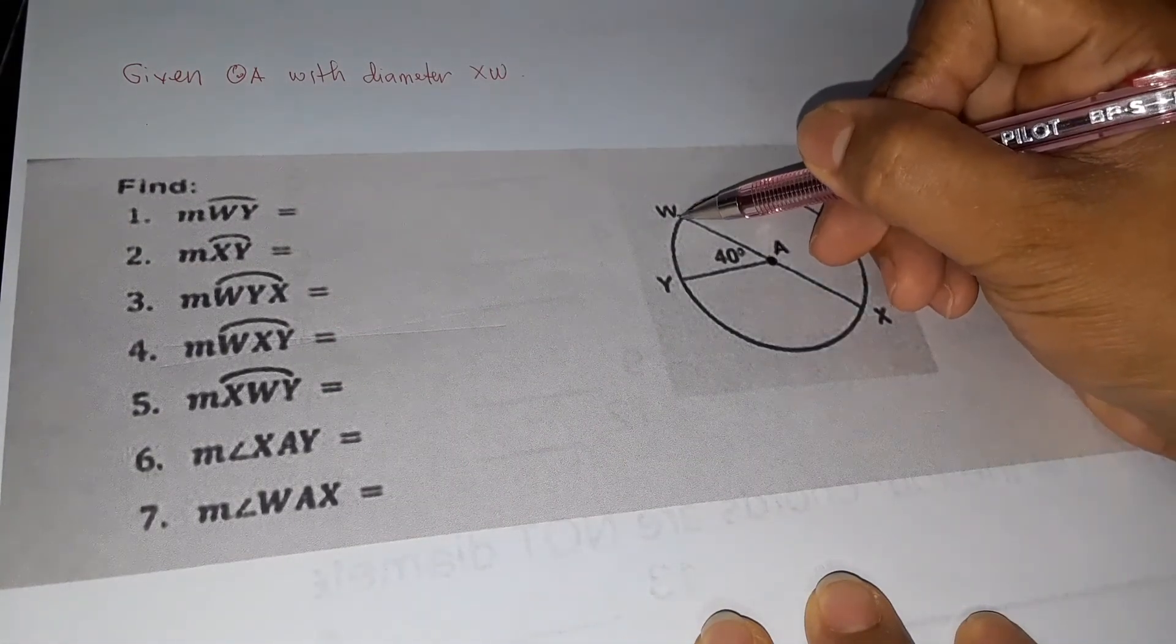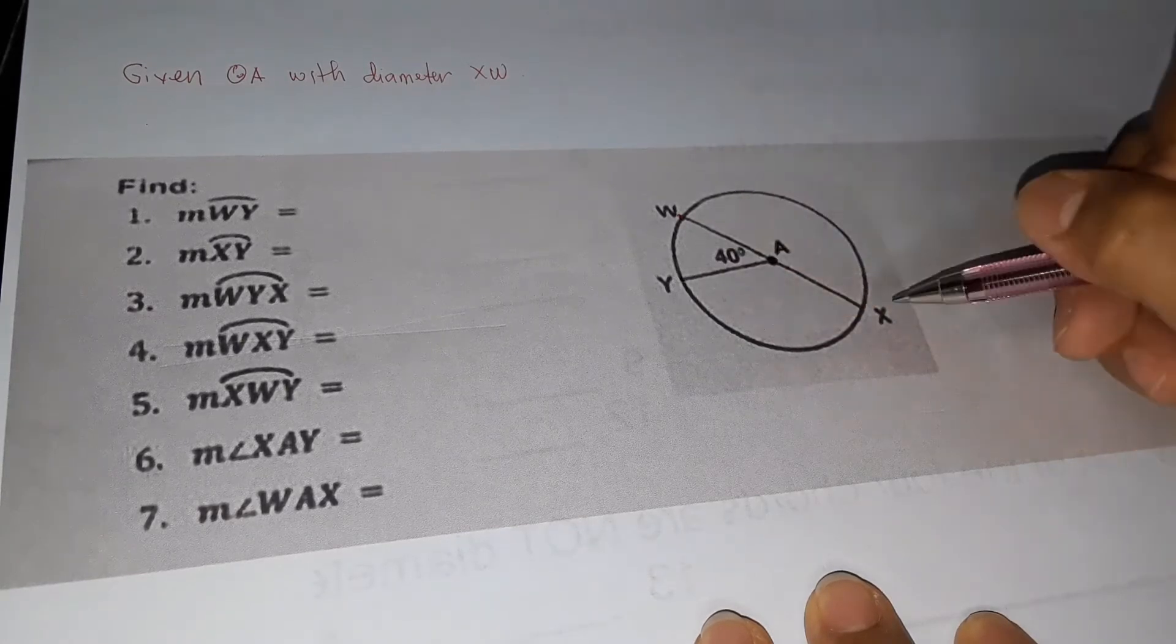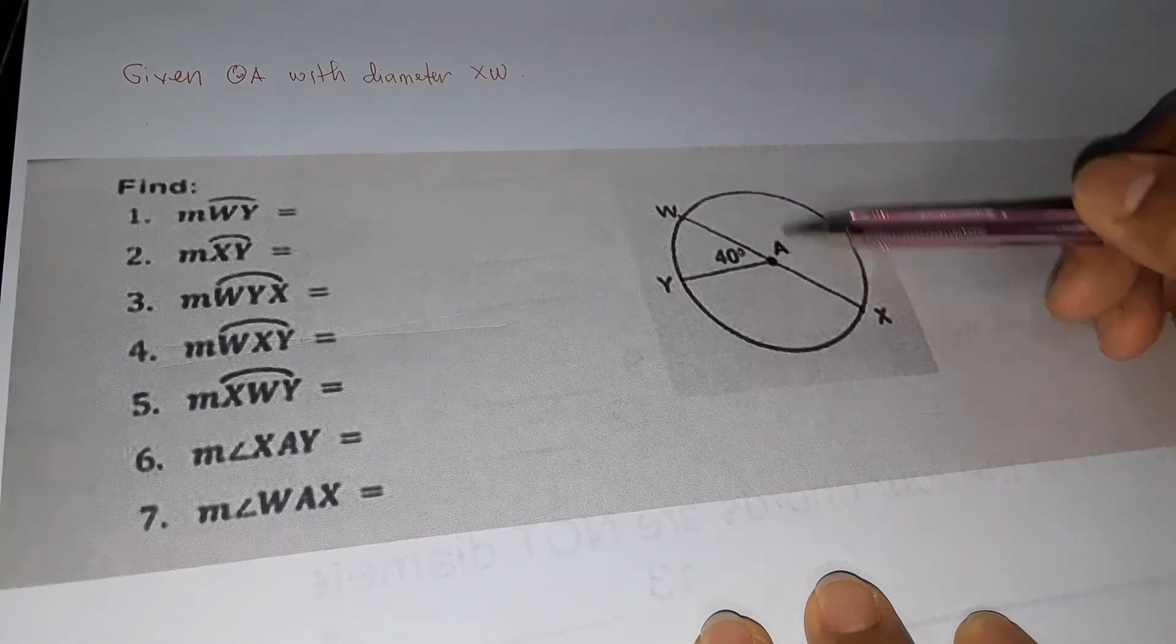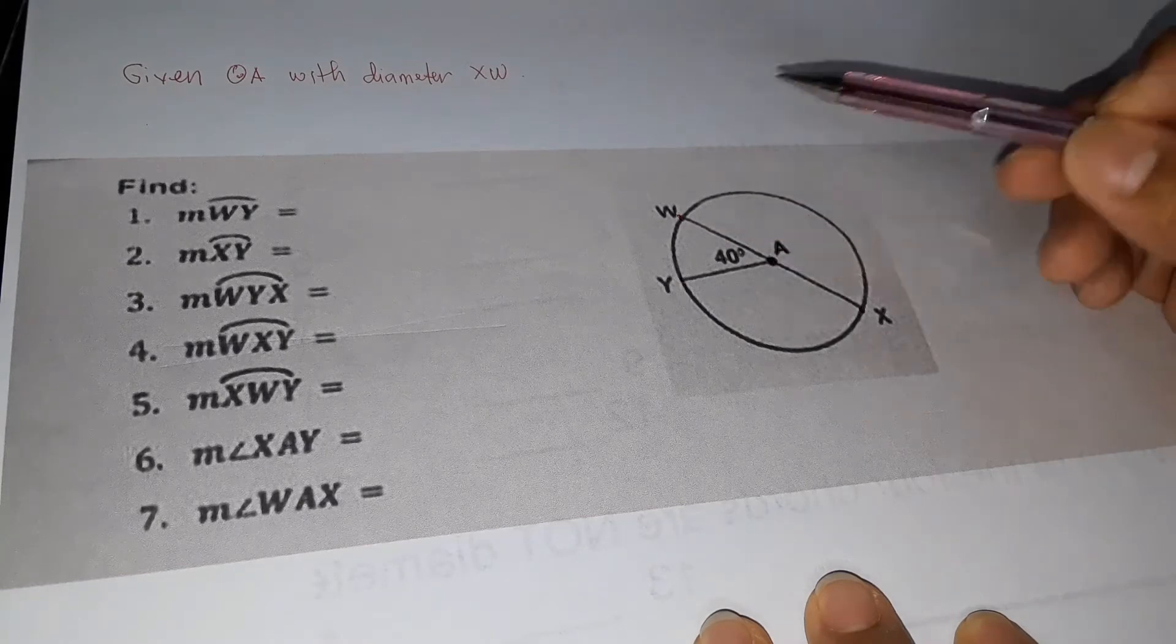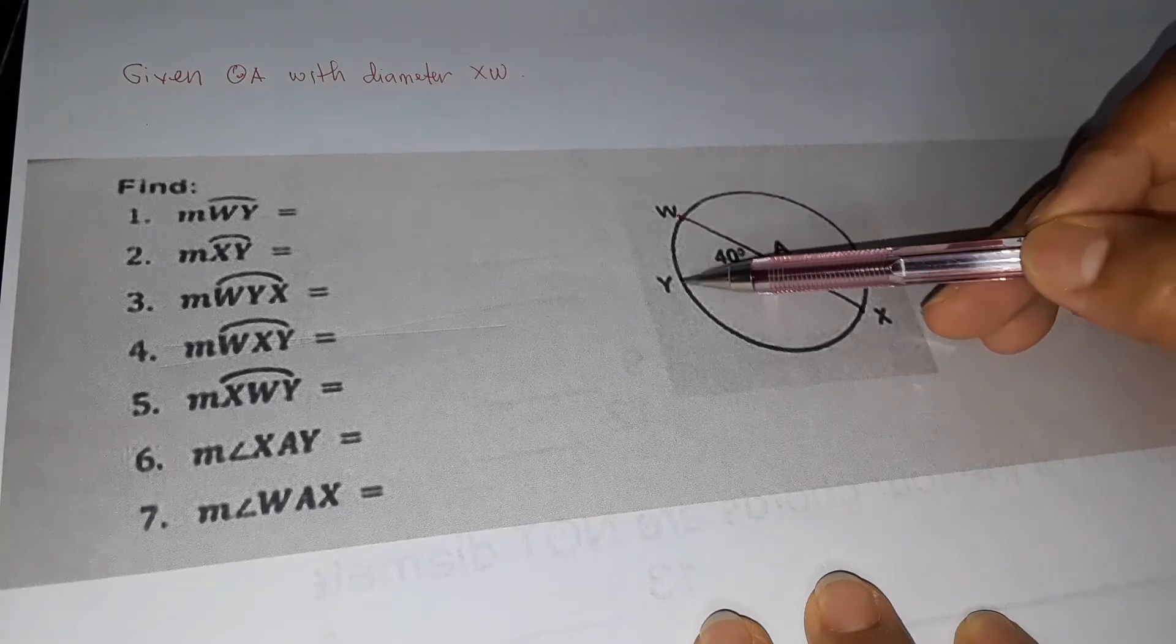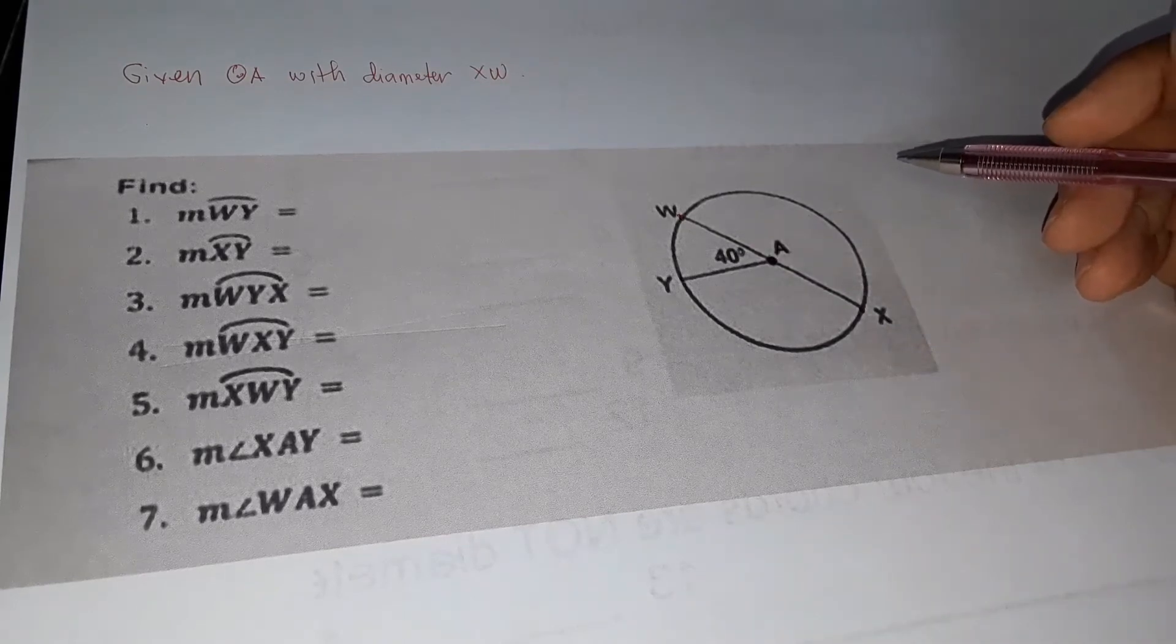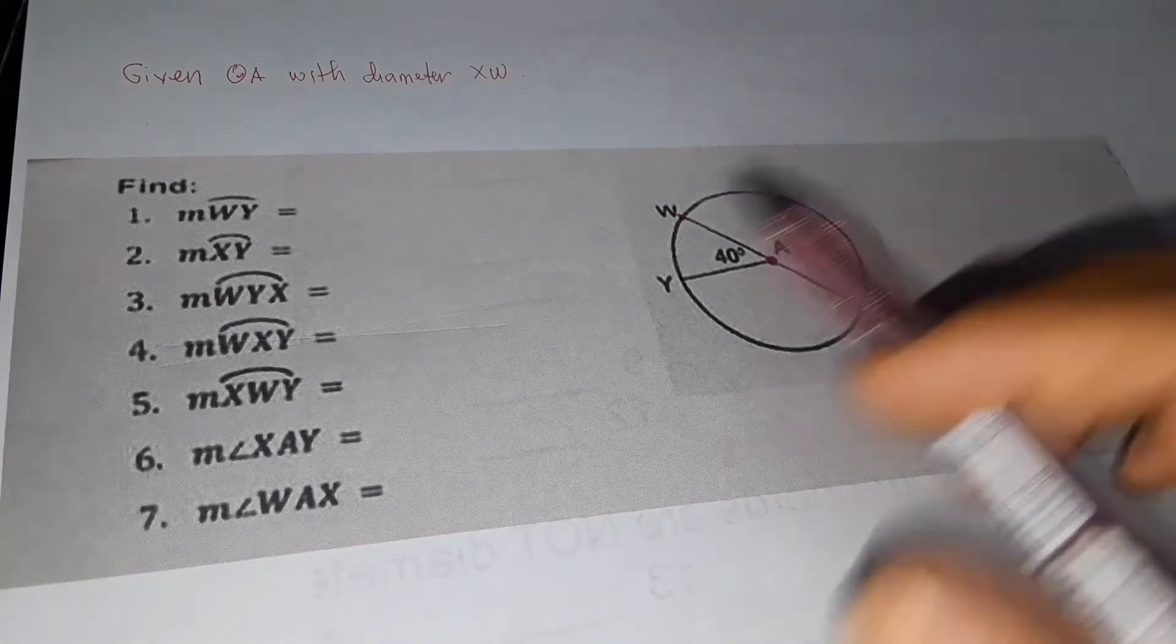The points of a circle are named using big letters. We have the center point which is A, which is the name of the circle, and we also have point W, point X, and point Y.